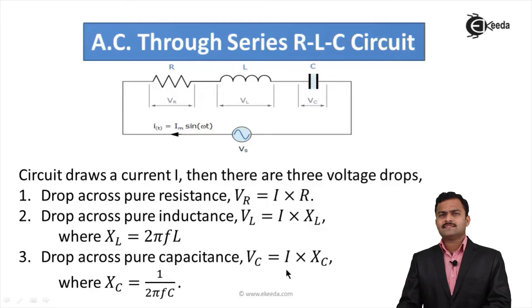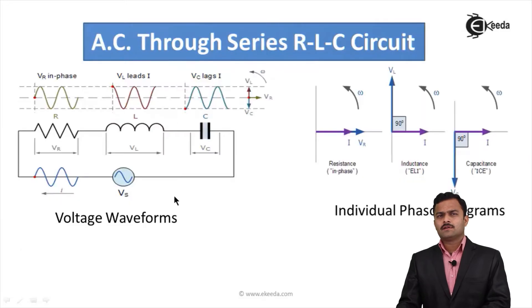In the next slide, I will draw the individual voltage waveforms and individual phasor diagrams. If this is a sinusoidal quantity starting from zero, obviously across resistance it will be the same as the current which is given as Im sin ωt. Here the corresponding phasor diagram V and I are in phase.